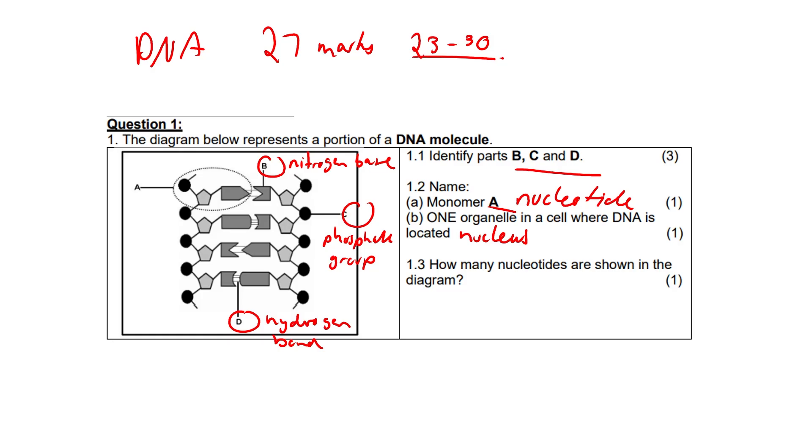1.3, how many nucleotides are shown in the diagram? Here we would need to count the repeating units of sugar, phosphate, and nitrogen bases. Based on the diagram as given here, the answer is going to be four nucleotides.